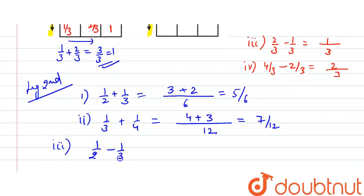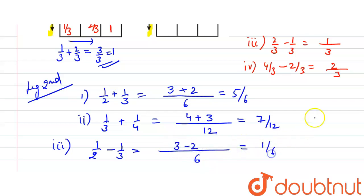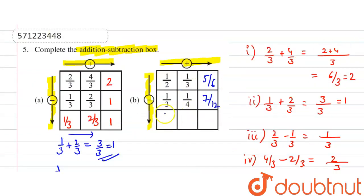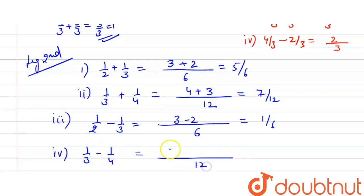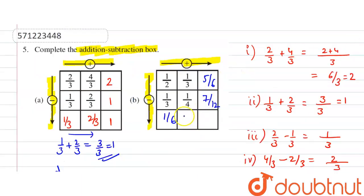Now subtract 1/2 minus 1/3: the LCM is 6, and here it is 3 minus 2 equals 1/6. Now subtract 1/3 minus 1/4: the LCM is 12, and 4 minus 3 equals 1, so the answer is 1/12.